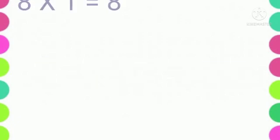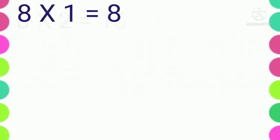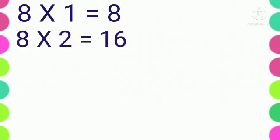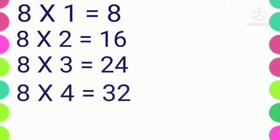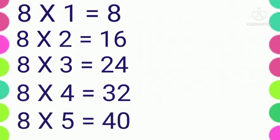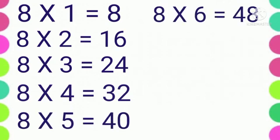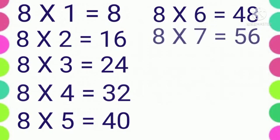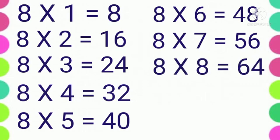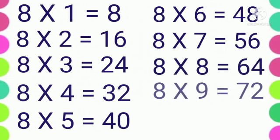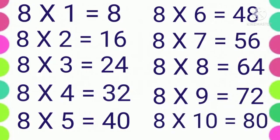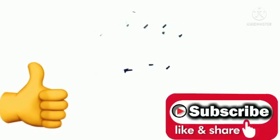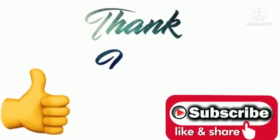8 1s are 8, 8 2s are 16, 8 3s are 24, 8 4s are 32, 8 5s are 40, 8 6s are 48, 8 7s are 56, 8 8s are 64, 8 9s are 72, 8 10s are 80.